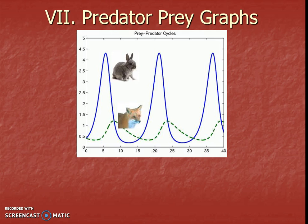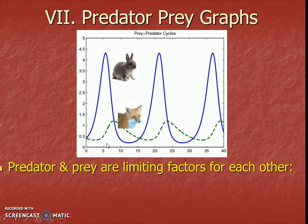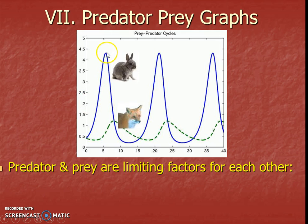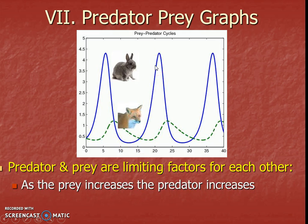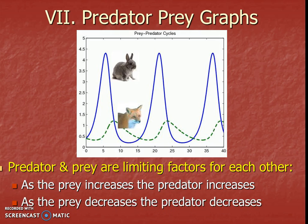There's also a very common graph other than our carrying capacity graph that we have to recognize — we call this a predator-prey graph. A really common example uses a fox as the predator and a rabbit as the prey. The predator and prey are limiting factors for each other — they keep each other in check. The average number of rabbits over the whole period is probably the carrying capacity of the rabbits. The fox eats them and keeps them in check, but sometimes the fox eats too much and their own numbers decrease, which allows the rabbit to rebound. As the prey increases the predator increases; as the prey decreases the predator decreases. They each have a different average because carrying capacity is specific to an organism in a particular environment.